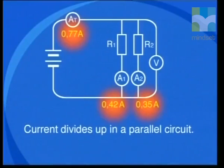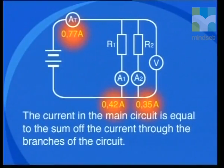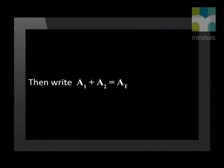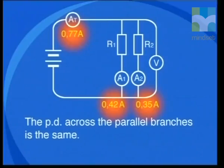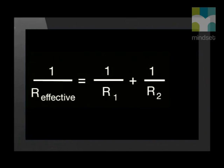Therefore we say that resistors in parallel are current dividers. The current of the main circuit from the battery is equal to the sum of the current through the branches: A1 plus A2 equals A total. The potential difference across the parallel branches is the same. The greater the number of resistors in parallel, the smaller the resistance. This can be expressed as: 1 over R effective equals 1 over R1 plus 1 over R2, where R1 and R2 are the values of the resistors in the parallel combination.